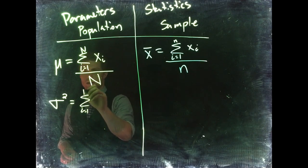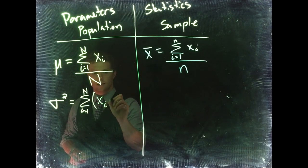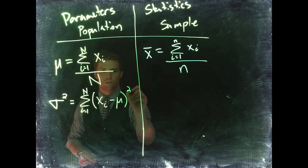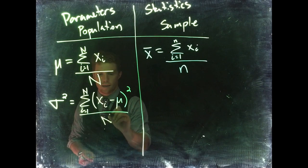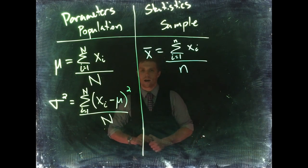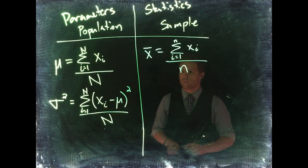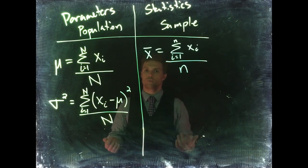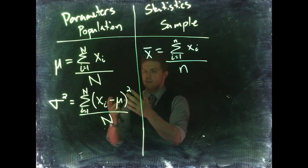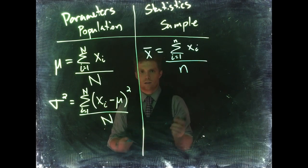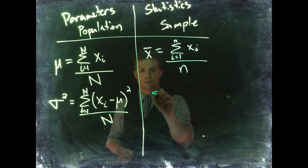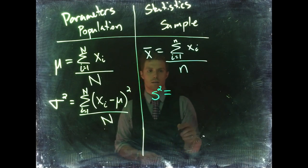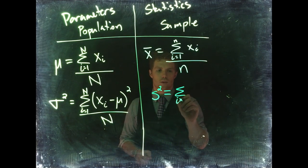Now let's talk about the variance. The population variance is written as sigma squared, and it equals the summation from i equals 1 to N of (x sub i minus the mean) squared, divided by N. This is the average squared distance from the mean — we're trying to figure out how far away our measurements are on average from the mean. Our variance helps us do that.